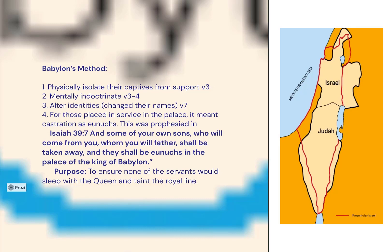For those placed in service in the palace, it meant castration as eunuchs. This was prophesied in Isaiah 39:7: 'And some of your own sons who will come from you, whom you will father, shall be taken away and they shall be eunuchs in the palace of the king of Babylon.'